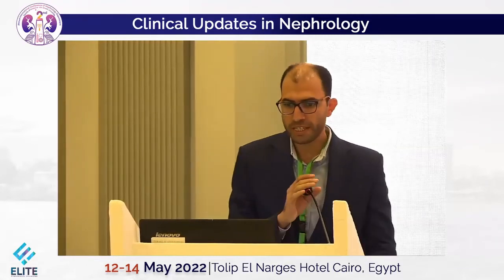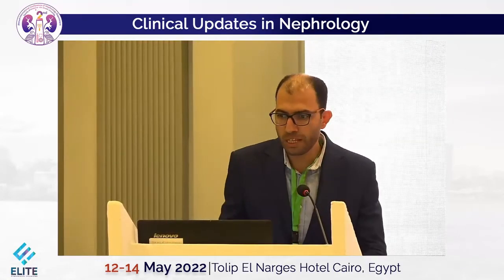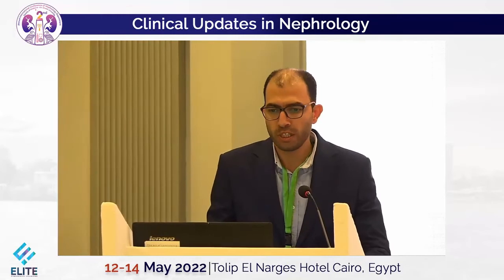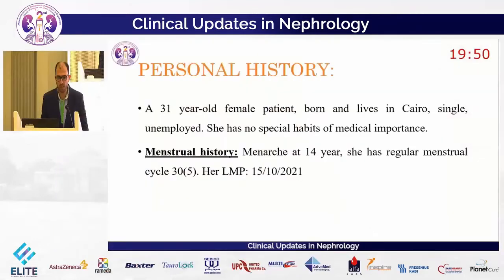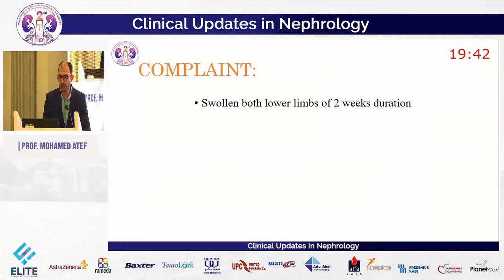Our patient is a 31-year-old female, born and living in Cairo. She is single and unemployed. She has no special habits of medical importance and an unremarkable menstrual history with regular menstrual cycles. Her current condition started two weeks before admission with swollen lower limbs.